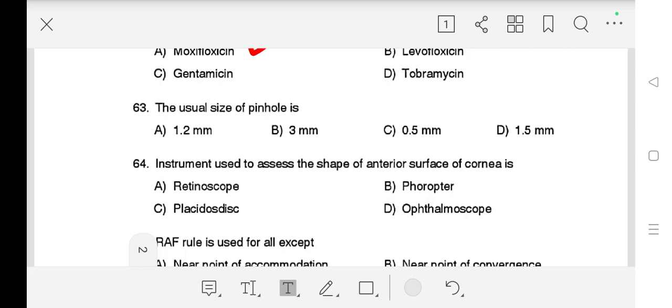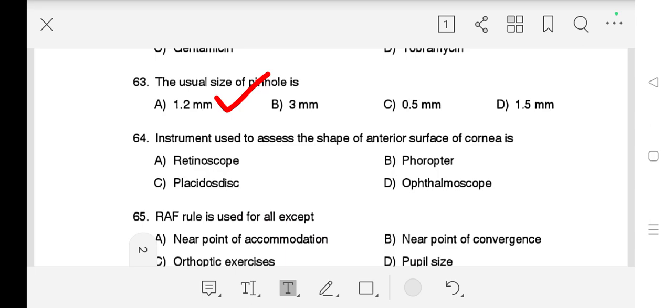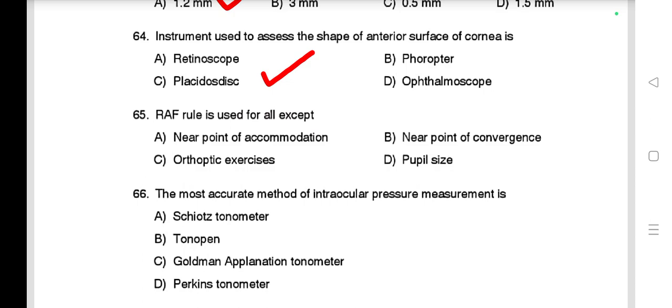Question number 63 is: The usual size of pinhole is A) 1.2mm, B) 3mm, C) 0.5mm, D) 1.5mm. Correct answer is A) 1.2mm. Question number 64 is: Instrument used to assess the shape of anterior surface of cornea is A) Retinoscope, B) Keratometer, C) Orthoptic exercise, D) Pupillary size. Right answer is D) Pupillary size.